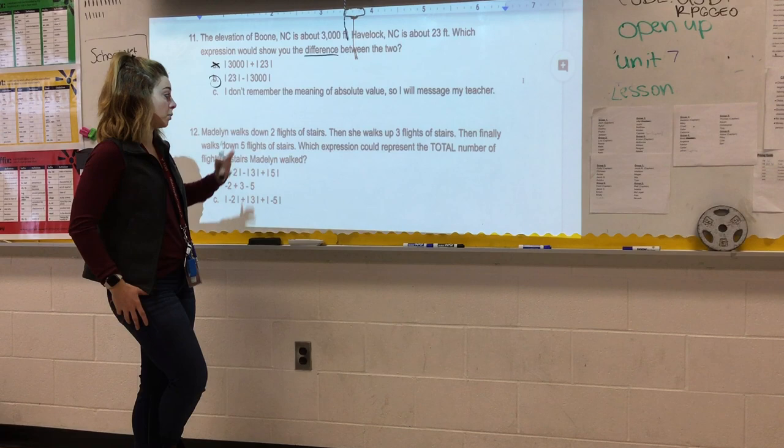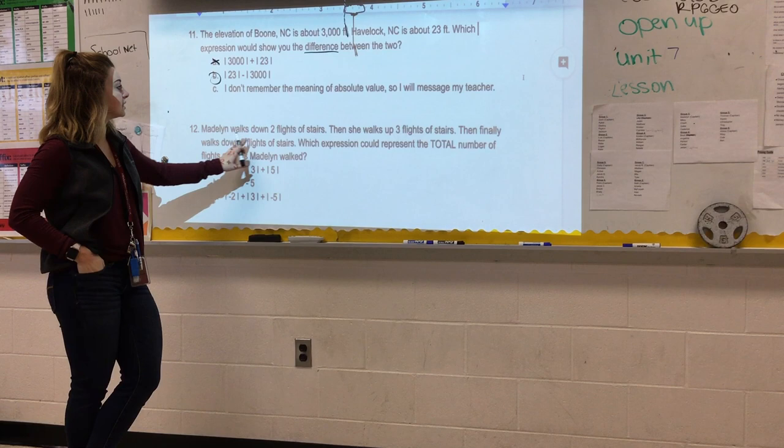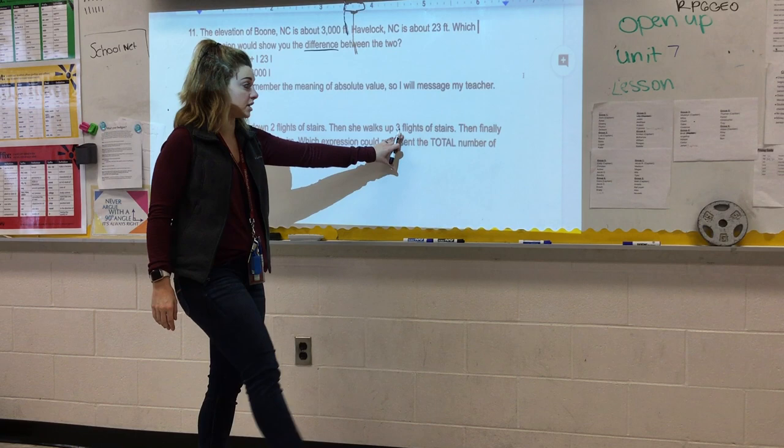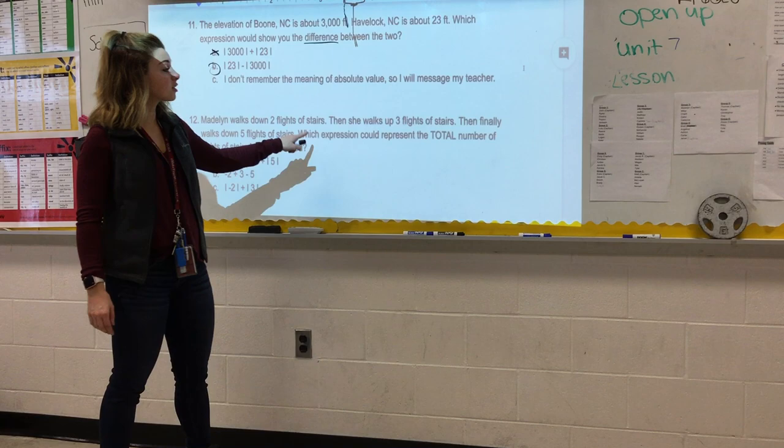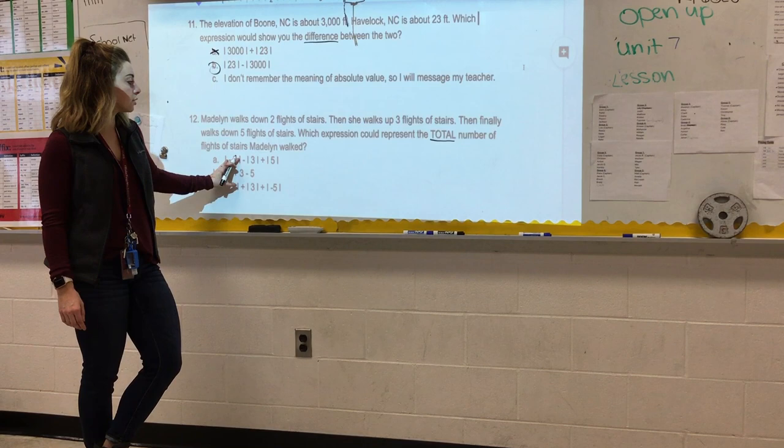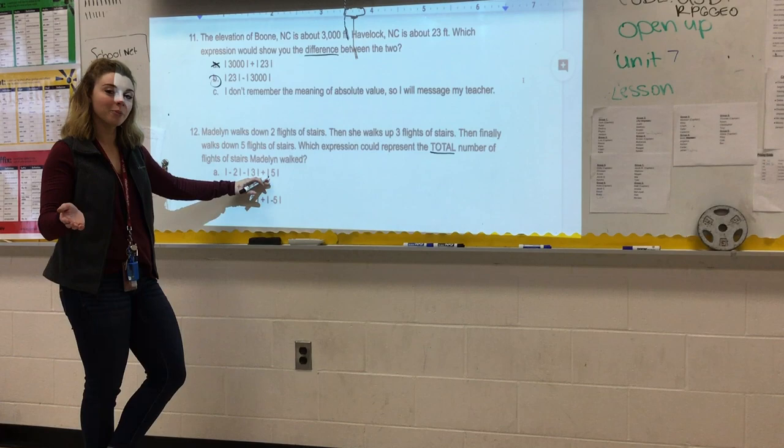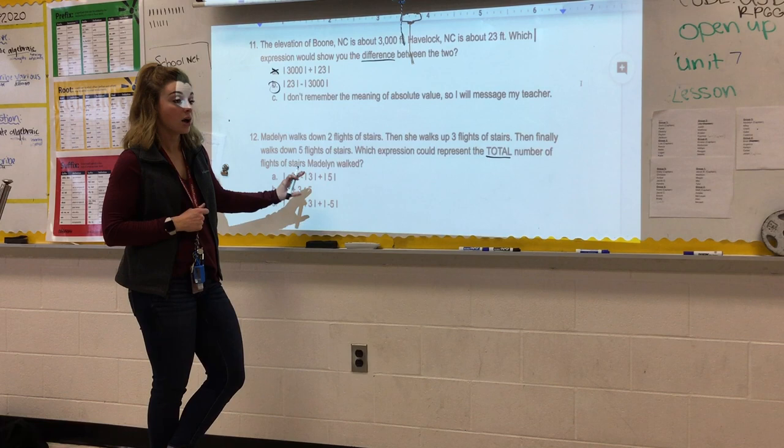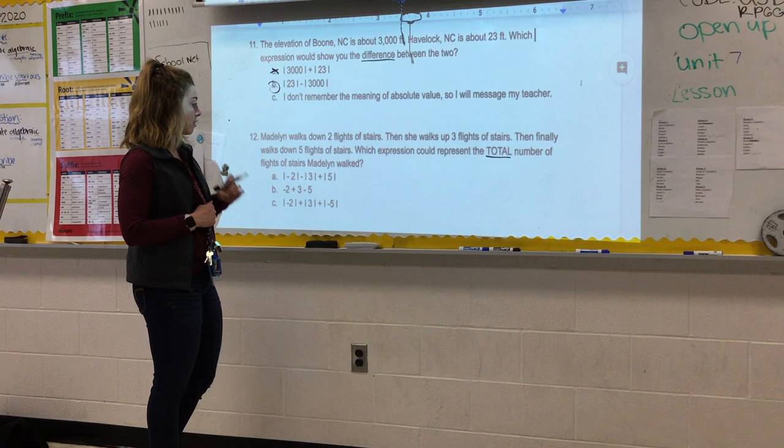So the next one is also absolute value. It says Madeline walked down two flights of stairs, then she walked up three flights of stairs, then finally she walked down five flights of stairs. Which expression could represent the total number of flights Madeline walked? If we think about this, she's not going to walk negative stairs. She's walking these stairs, she's burning calories. She's walking these stairs, so we are not going to have negative. We are going to be looking at the absolute values of each of these numbers.